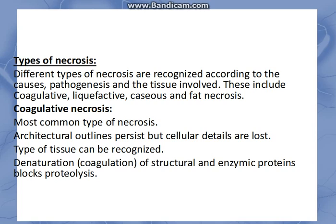First is coagulative necrosis. This is the most common type of necrosis, mostly seen after any ischemic injury. Due to ischemia in the body where there is no blood supply, necrosis takes place — it is of the coagulative variety. Only in case of brain tissue, it is of the liquefactive variety. In this type of necrosis, the cell borders and architectural outlines persist, but the details inside the cell are lost. Since the architectural outlines persist, we can identify what type of tissue we are studying.